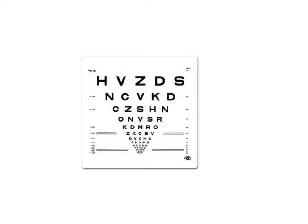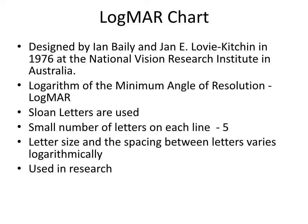This is the LogMAR chart, used as a standard for most research projects. LogMAR stands for Logarithm of the Minimum Angle Resolution. It was designed in 1976 by Ian Bailey and Jan Levy-Kitchen at the National Vision Research Institute of Australia. Sloan letters are used, with five letters per line — equal for each line. The key feature is that letter size and the spacing between letters and between lines is logarithmically determined, making it very useful for research.